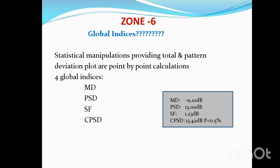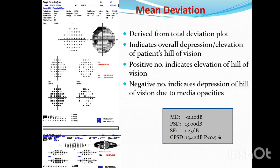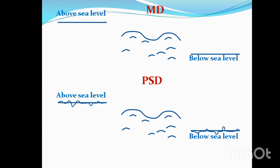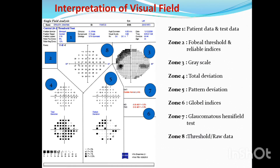Global indices include mean deviation, pattern standard deviation, SF, and CPSD. We have a lot of detail about these. Basically, if we look at the global indices, mean deviation is a key criterion and we will look at these in more detail.